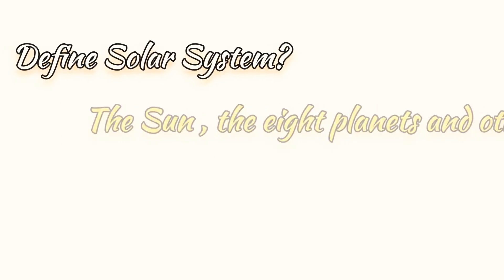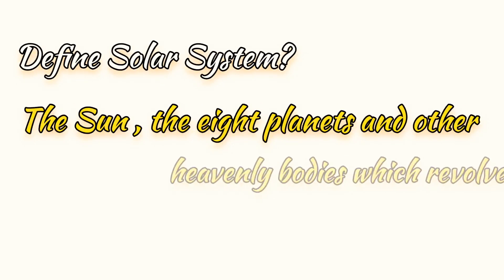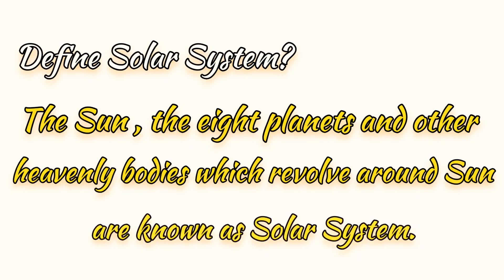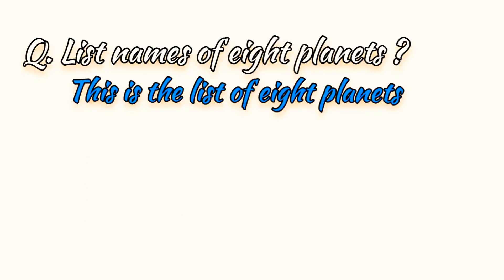Define solar system. The sun, the eight planets and other heavenly bodies which revolve around the sun are known as the solar system. What is the definition? The sun, the eight planets and other heavenly bodies which revolve around the sun are known as the solar system.